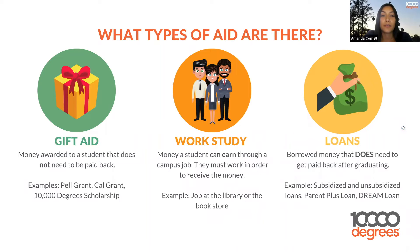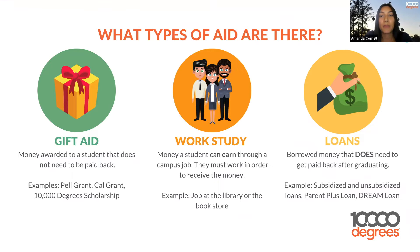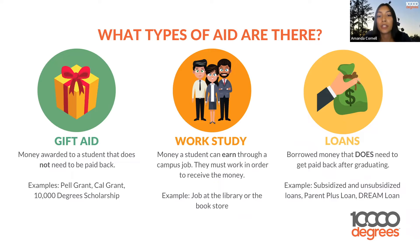What types of aid are there? There are a few different types you may be able to receive. Gift aid does not need to be paid back, and comes in forms such as the Pell Grant, Cal Grant, 10,000 Degrees Scholarship, or other scholarships you may apply for. Work study is money you earn through a job on campus, such as at the library or bookstore. Loans are borrowed money that need to be paid back after graduation — examples include subsidized and unsubsidized loans, parent plus loans, and the dream loan.